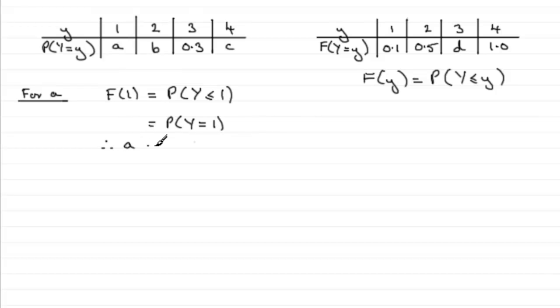Right, okay, we've got a. Now let's go on to b. For b, how are we going to get b? We use F(2). Now F(2) represents the probability of Y being less than or equal to 2.